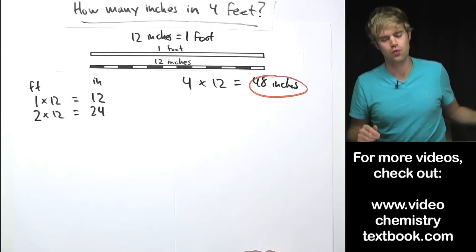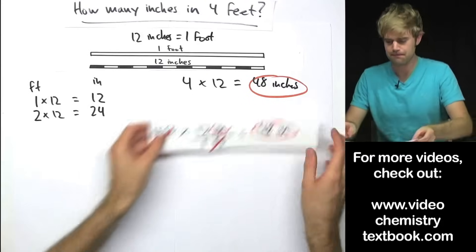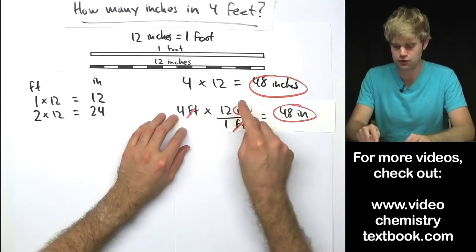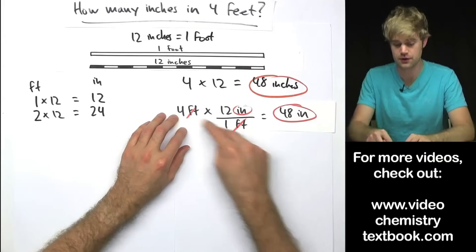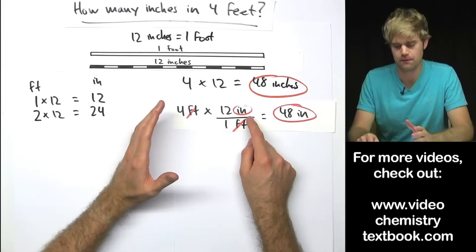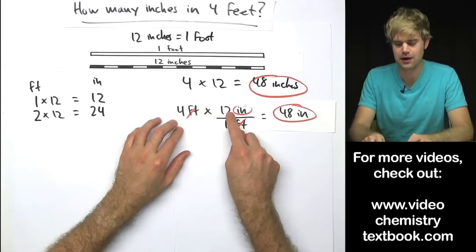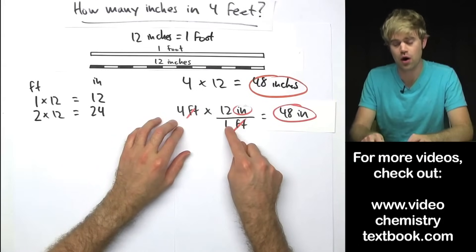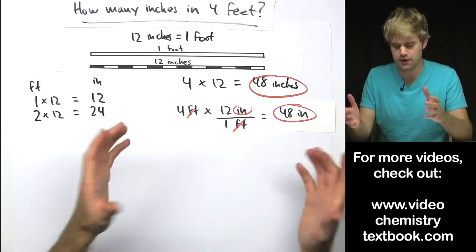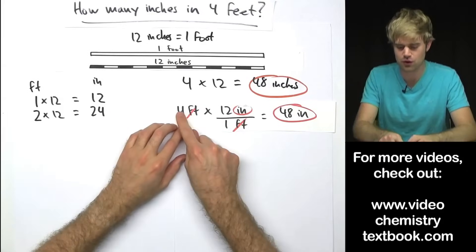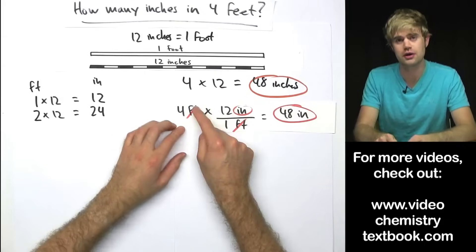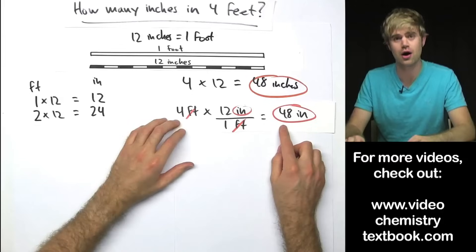How would I do this with conversion factors? I'd set up a problem that looks like this. I have my 4 feet here and I have 12 inches over 1 foot so that the feet cancel out. Look at the math that's going on here though — I'm just doing 4 times 12 and then dividing by 1, but the division by 1 doesn't change anything. So the only thing that's really important is that I'm doing 4 times 12, and that is exactly the same as when I just think through the problem.